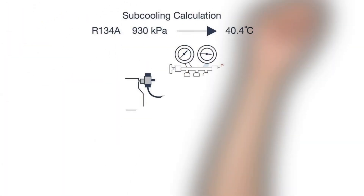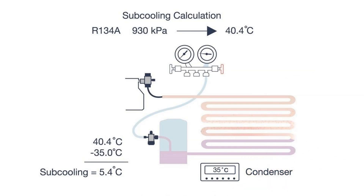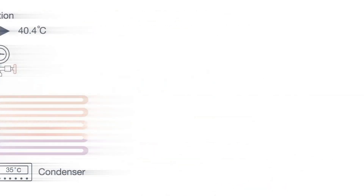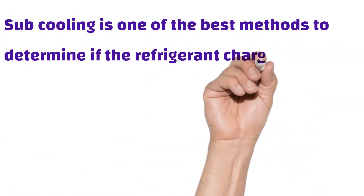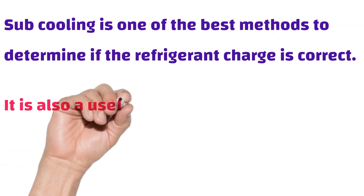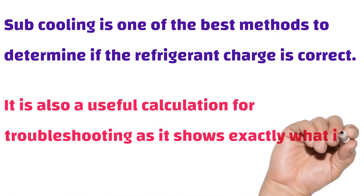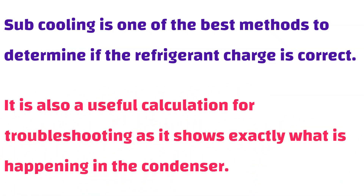Here is a sample example for how to calculate sub-cooling. Sub-cooling is one of the best methods to determine if the refrigerant charge is correct. It is also a useful calculation for troubleshooting, as it shows exactly what is happening in the condenser.